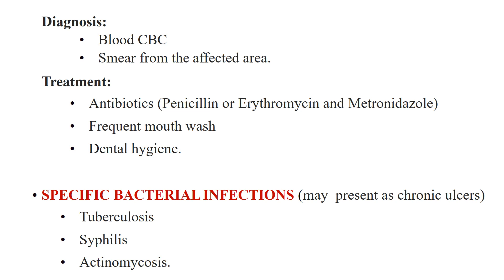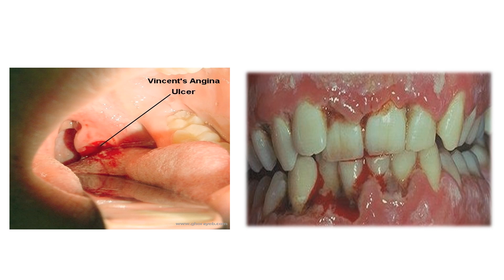For diagnosis, complete blood count and peripheral smear from the affected area should be carried out. Treatment includes systemic antibiotics, especially penicillin or erythromycin along with metronidazole, frequent mouthwashes, and special attention to dental hygiene. Other specific bacterial infections like tuberculosis, syphilis, and actinomycosis may present as a chronic ulcer. The picture shows the ulcer in Vincent's angina on the tonsil, and the interdental papillae and gingiva are covered with swollen, red, necrotic slough.